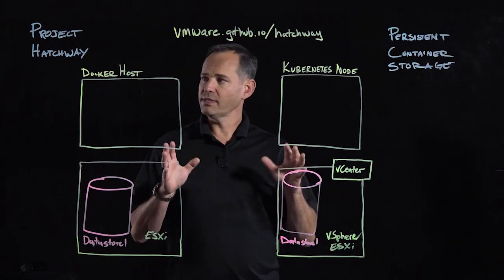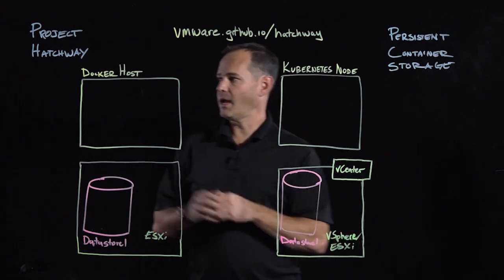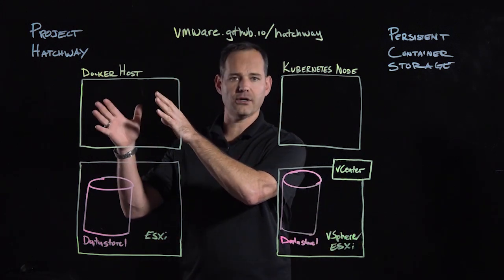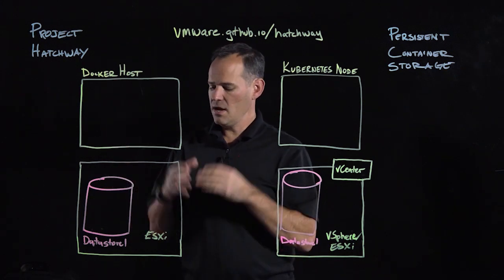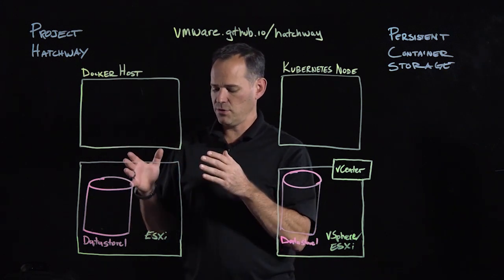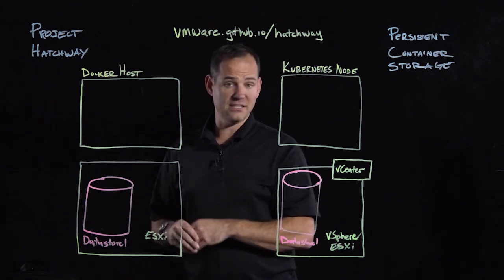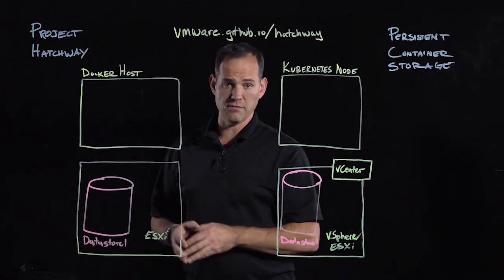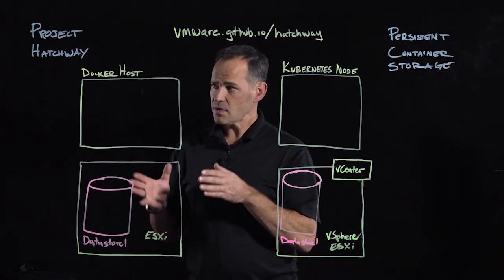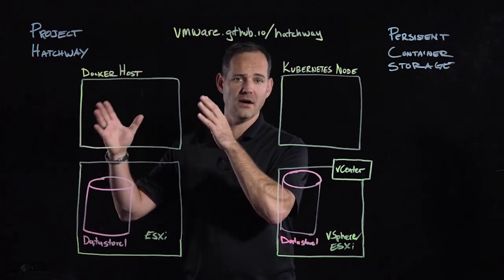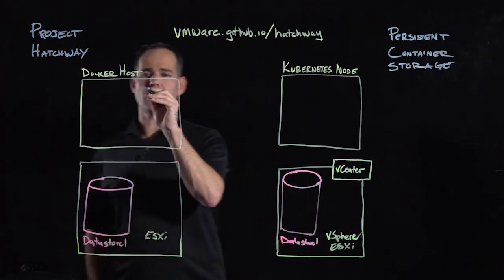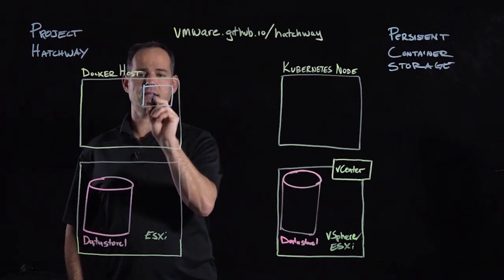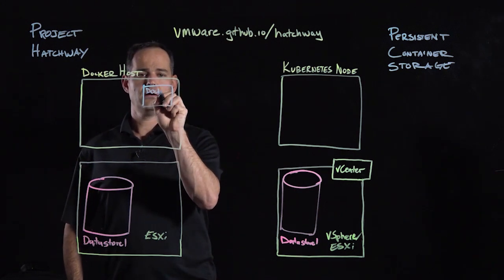I've got two examples here pre-written to save some time. I've got our standard Docker host environment. So if you have a Docker host virtual machine running in vSphere — specifically just ESX, even a free version of ESX — this works. In effect, it's a regular Docker host VM, and what makes it a Docker host is the fact that we've got the Docker engine running.